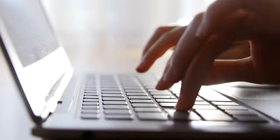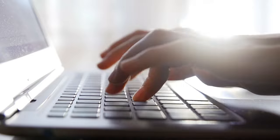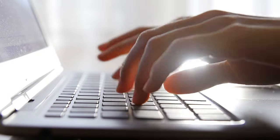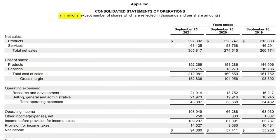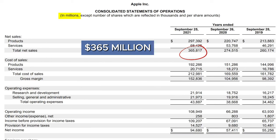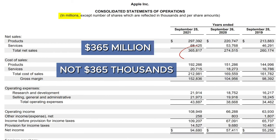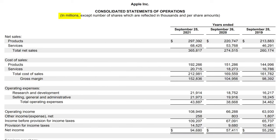Let's break down and analyze Apple's income statement with a quick overview. When examining a company's income statement, keep a couple of key points in mind. In the case of Apple, you'll notice that the numbers are presented in millions of dollars — this is done to condense the income statement and make it easier to read. So when you see a figure like 365, it actually represents $365 million, not $365,000. It's also essential to be aware that some companies' fiscal years don't align with the calendar year. In Apple's case, the fiscal year for 2021 ended in September 2021, not December 2021.